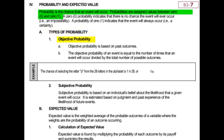Please highlight in the first line: objective probability is based on past outcomes. For example, returns on the stock market. If you take a look at past history, go back 10 years, 20 years, 30 years, we could come up with the average return on the S&P over that period of time. That's an objective probability.